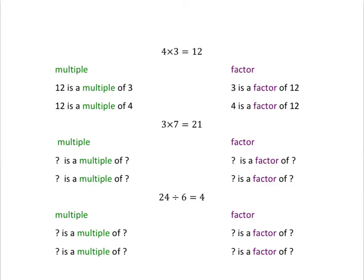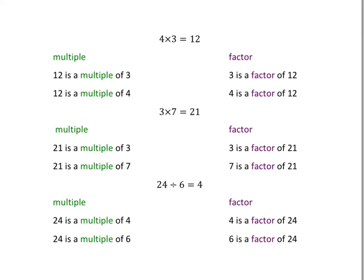We know that if we take 24 and divide it by 6, we get 4. Make up the sentences with the words multiple and factor that go with that fact. Pause the video now. The answers: 21 is a multiple of 3 and 21 is a multiple of 7, because 21 is got by multiplying 3 or 7 by a whole number. And 3 is a factor of 21 and 7 is a factor of 21, because both divide into 21 with no remainder. Similarly, 24 is a multiple of 4 and 24 is a multiple of 6, and 4 is a factor of 24 and 6 is a factor of 24.